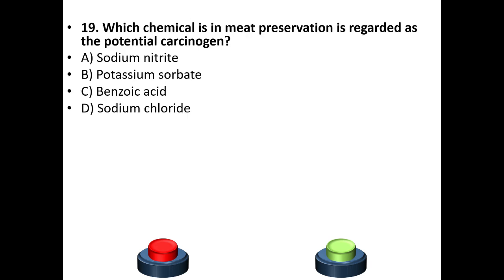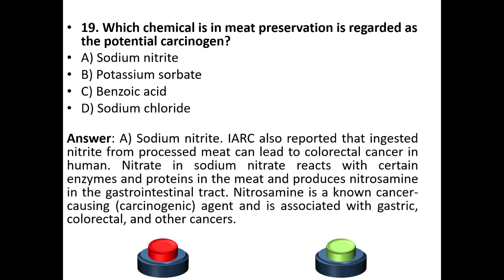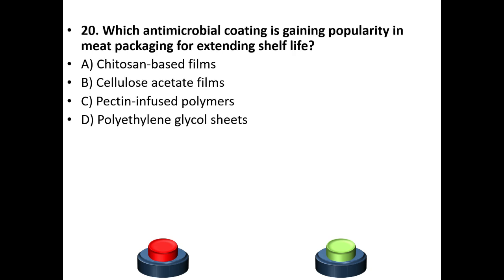Nineteenth question: Which chemical used in meat preservation is regarded as a potential carcinogen? A) sodium nitrate, B) potassium sorbate, C) benzoic acid, D) sodium chloride. The answer is option A — sodium nitrate. IARC reported that ingested nitrate from processed meat can lead to colorectal cancer. Sodium nitrate reacts with enzymes and proteins in meat, producing nitrosamines in the gastrointestinal tract, which are associated with gastric, colorectal, and other cancers.